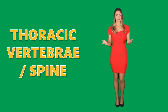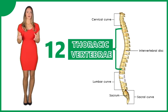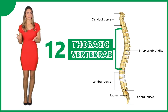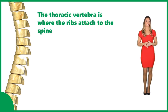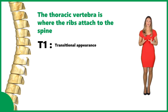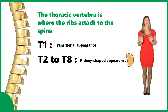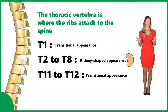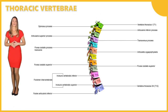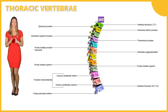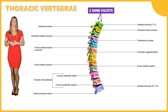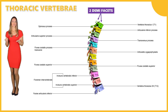Now let's go over the thoracic vertebrae, or the thoracic spine. There are 12 thoracic vertebrae, found in the chest section. The thoracic vertebrae is where the ribs attach to the spine. T1 has a transitional appearance, partly resembling the cervical vertebrae. T2 through T8 have a kidney-shaped appearance, while T11 and T12 also have a transitional appearance and partly resemble the lumbar vertebrae. Each thoracic vertebrae has two demifacets on the top and at the bottom of its vertebral body. These demifacets connect with the heads of two different ribs. The transverse processes from T1 to T10 also have costal facets that attach to the tubercles of the ribs.